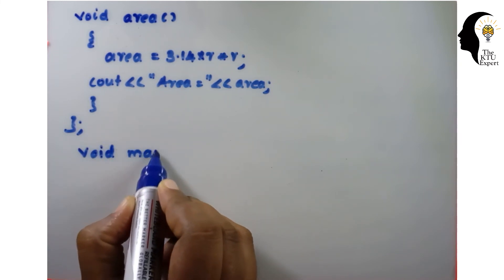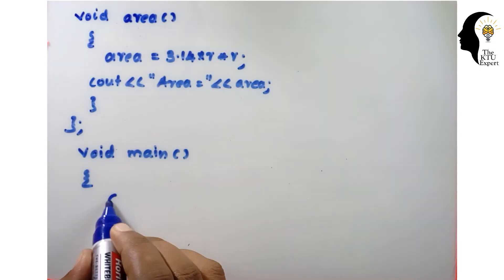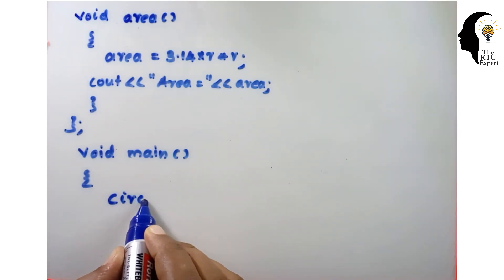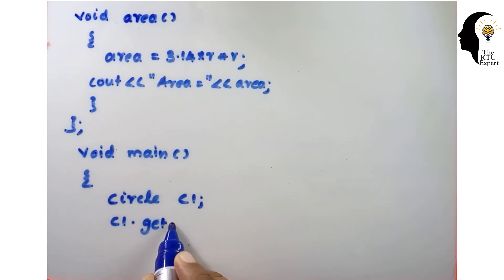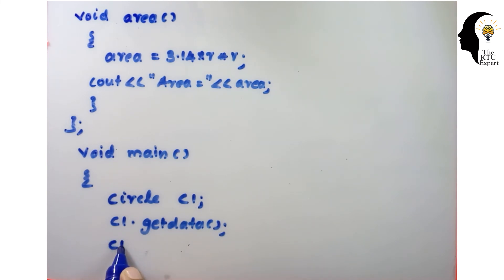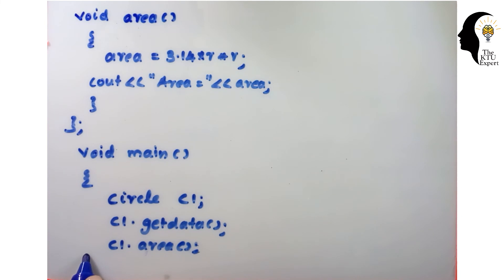After that, we write the main function: void main(). We declare the object — the class name is 'circle', so we create object c1. Then we call the member functions using this object: c1.getData() for getting the radius value, and c1.area() for finding the area of the circle.